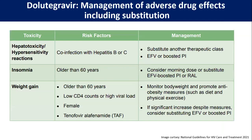For management of adverse drug effects including substitution: hepatotoxicity and hypersensitivity reactions — risk factors include co-infection with hepatitis B and C — management is substitution with another therapeutic class, such as efavirenz or boosted PI. If the patient is older than 60 years and has insomnia, consider morning dosing or substitute efavirenz with a boosted PI or raltegravir. Risk factors for weight gain are: age more than 60 years, low CD4 count, high viral load, female gender, and use of tenofovir alafenamide. We should monitor body weight and promote anti-obesity measures like diet and physical exercise. If significant increase despite physical measures, consider substituting efavirenz or boosted PI.